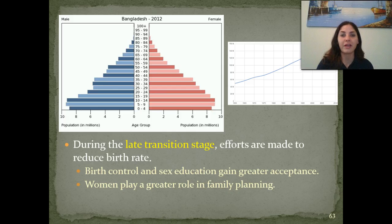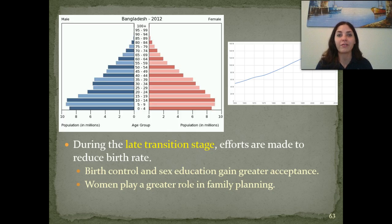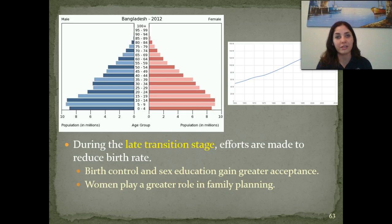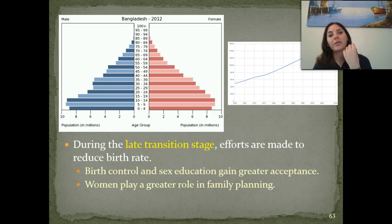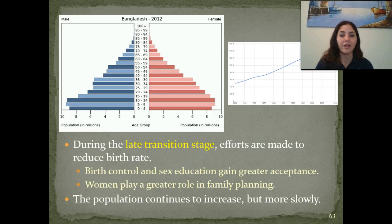In developing countries where women's rights are very low or non-existent, women don't have an opinion about whether to have a child — whatever the husband wants is what happens. But in the late transitional stages, women's rights start coming into play with more equal opportunities. The population continues to increase, but starts to increase at a much slower rate.